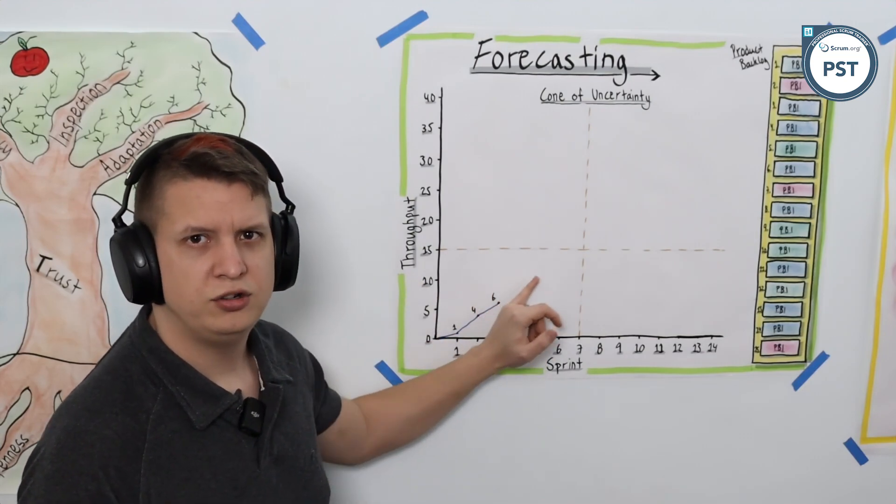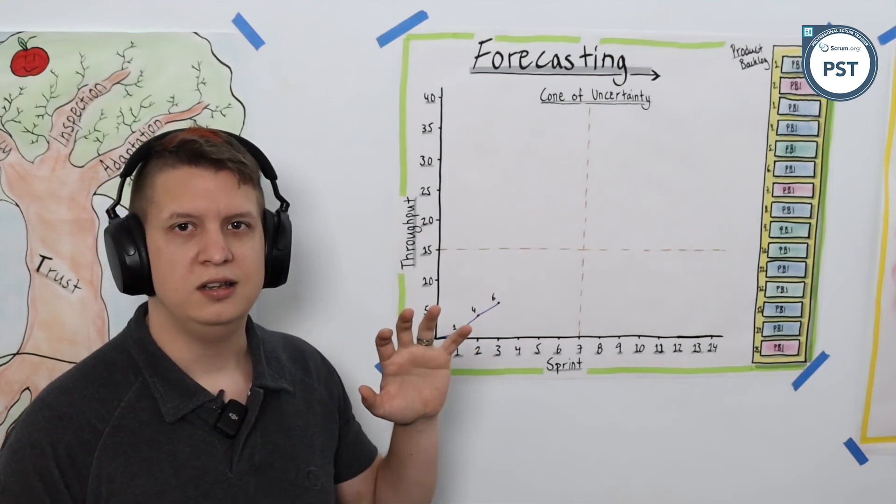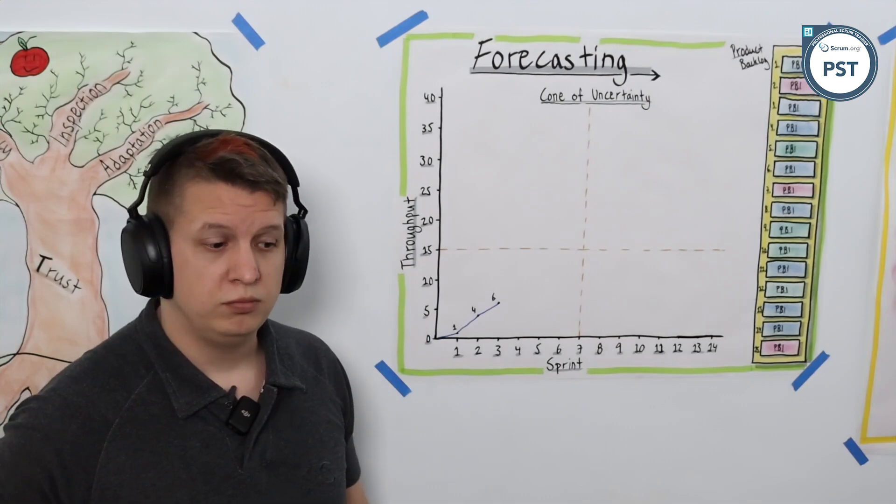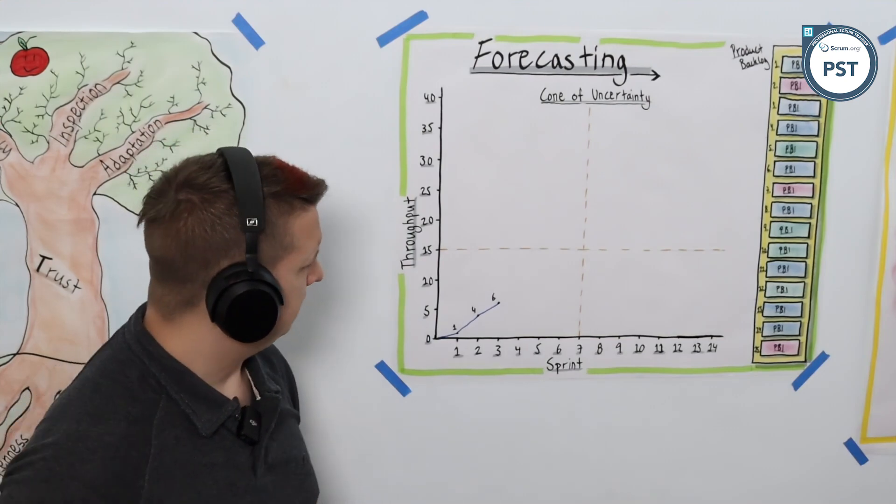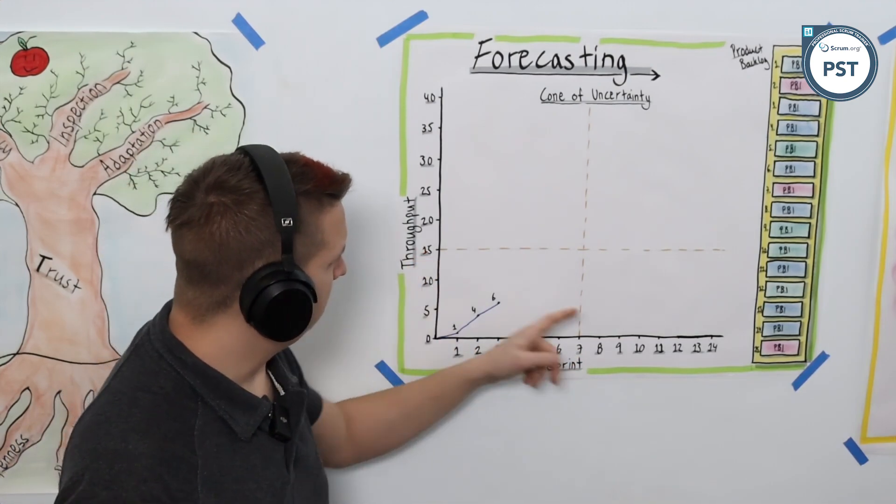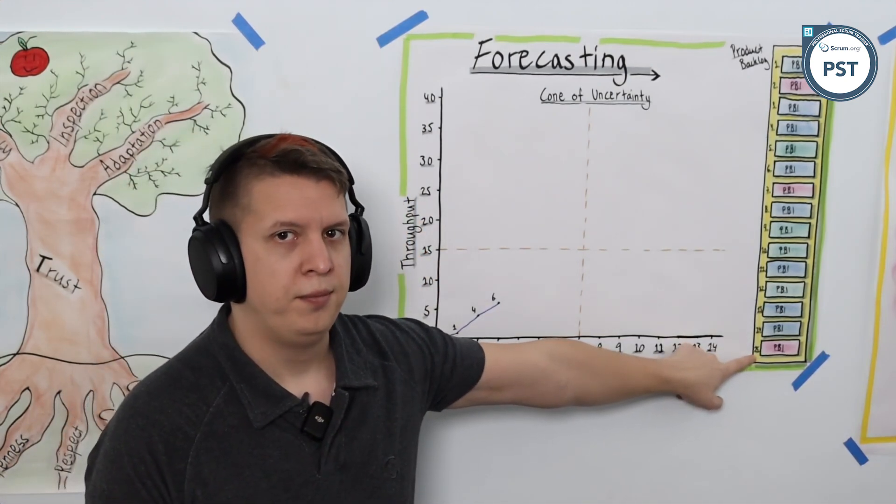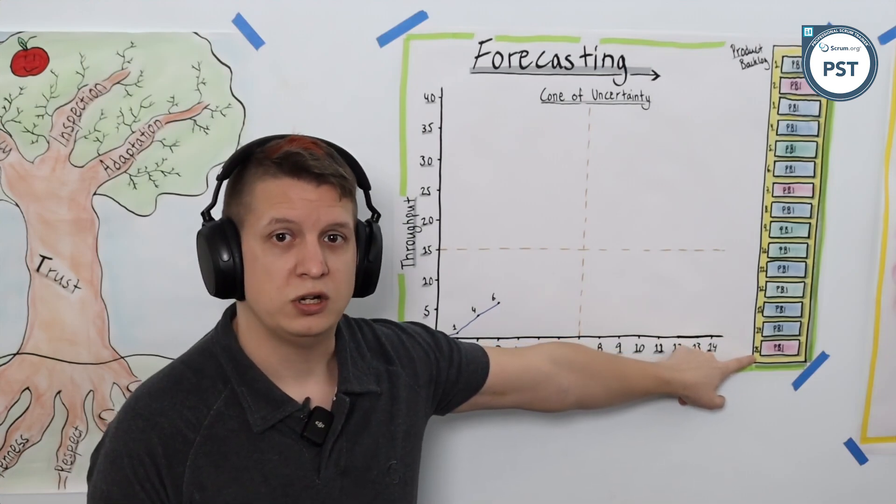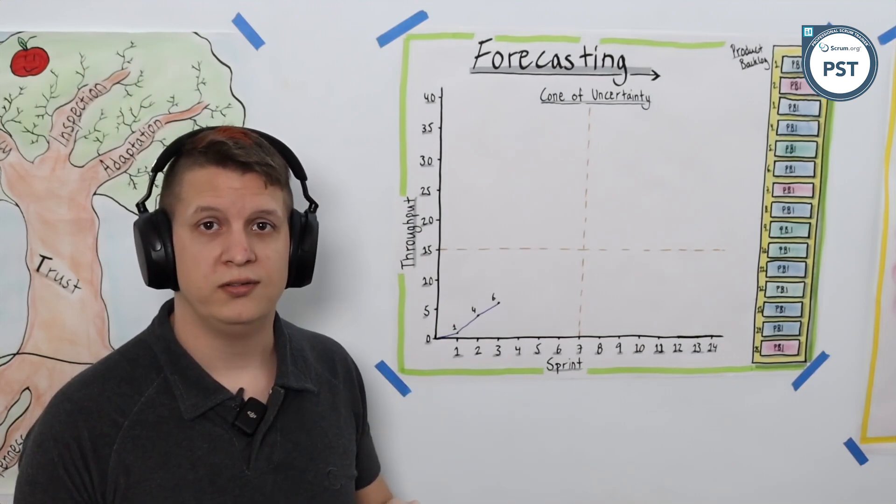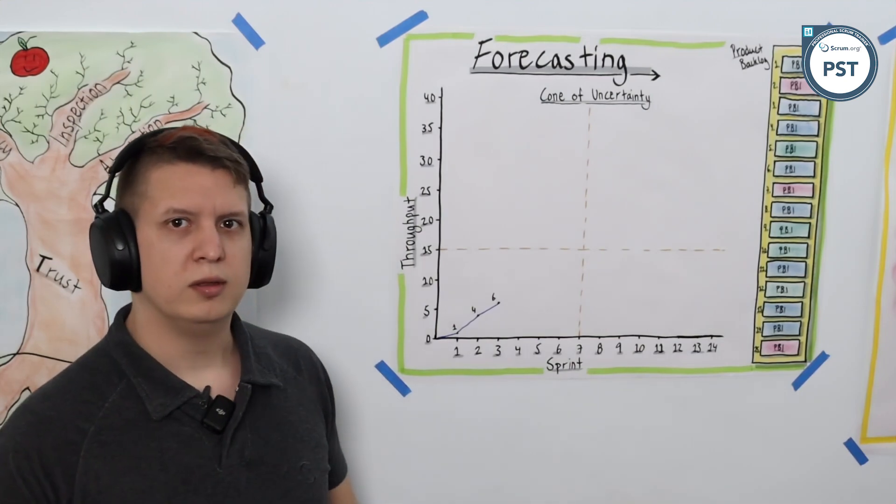That means our worst case was one, best case was three, and our average with those three points of data is two. Now we can look ahead into the future. When our stakeholder asks, okay, well how much stuff can you get done by sprint 7, or maybe they ask when can you get all 15 done by, we can try and answer that question by using that data and looking ahead with a cone of uncertainty.